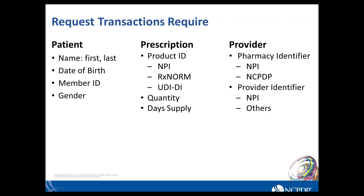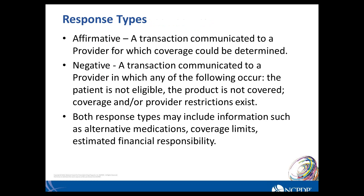Here's an overview of what the request transactions require. Transaction and routing information is always required. Patient information — name, date of birth, member identification number, and gender — is required. For the prescription or medication information, a product ID is needed, which could be an NDC, RxNorm, or UDI-DI, as well as quantity and day supply. In the provider section, the pharmacy needs to be identified by NPI or NCPDP, as well as the provider or prescriber by NPI or other valid values. Other elements such as dispenses written or residence information are situational or optional.